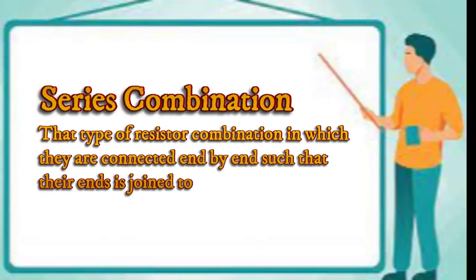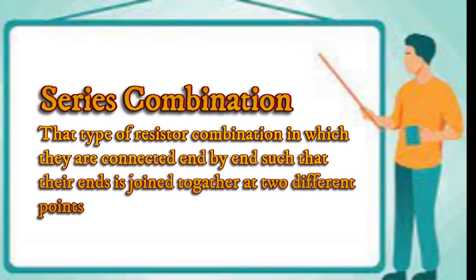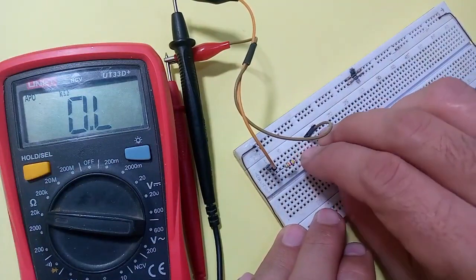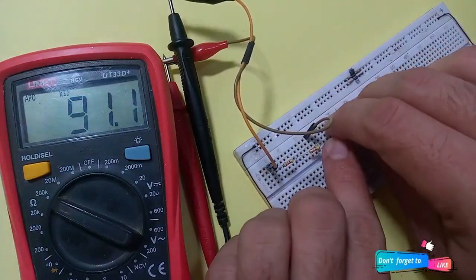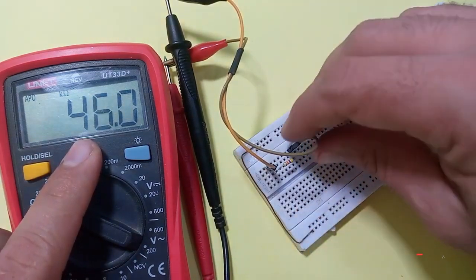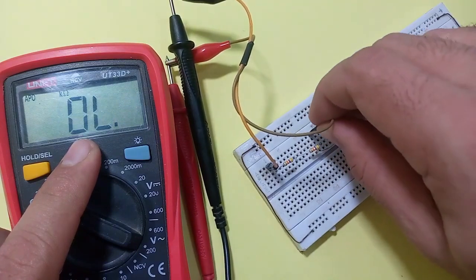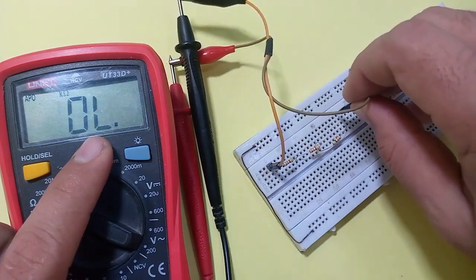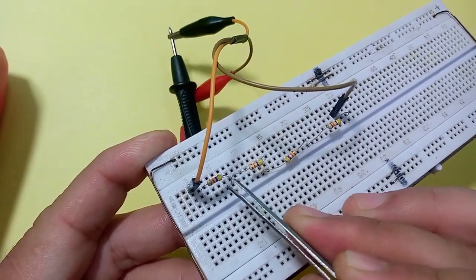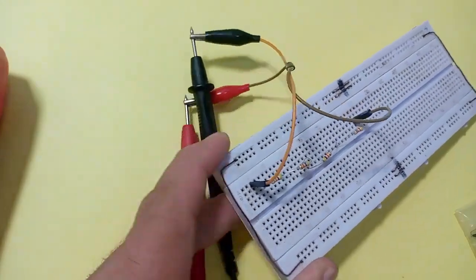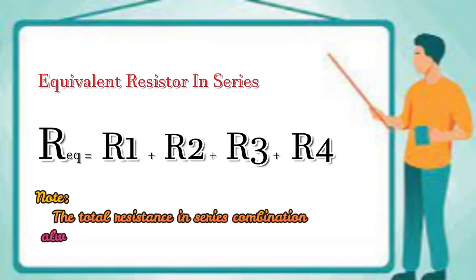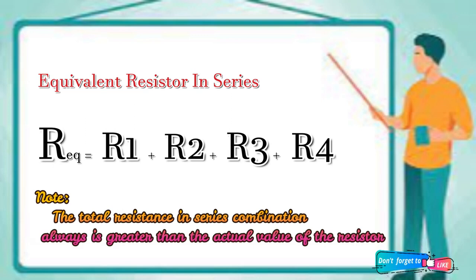Series combination: that type of resistor combination in which they are connected end to end such that their ends are joined together at two different points. Now to understand the series combination, let's do some arrangements. Check the resistance value at each end — as you see, it increases by adding resistors to the series. There is only one way for current to pass through it, so in series, adding resistance blocks the current flow, and as a result resistance increases. The equivalent resistance in series combination is found by this formula. Note: the total resistance in series combination is always greater than the actual value of any individual resistor.